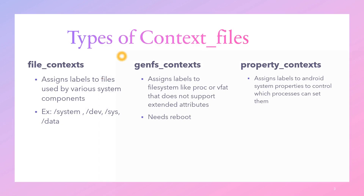There are various types of context files and we'll go through them one by one. The first one is file context. We assign labels to files used by various system components. If there is any change in the file context, to apply new changes we have to run the restorecon command. In simple words, all the files in your system are named by using the file context.